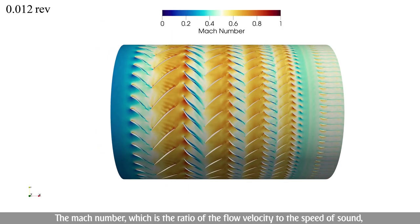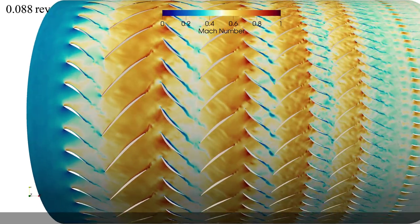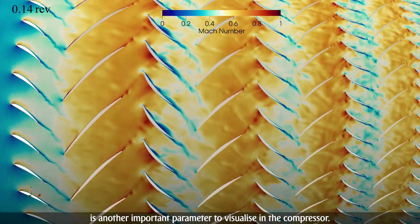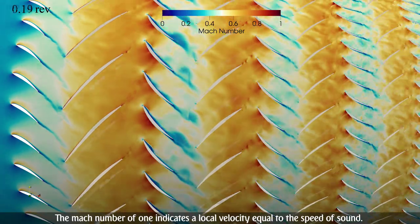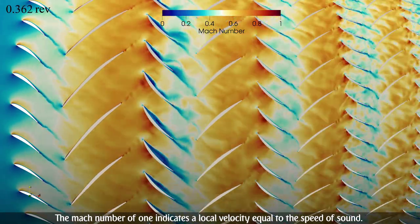The Mach number, which is the ratio of the flow velocity to the speed of sound, is another important parameter to visualize in the compressor. A Mach number of 1 indicates a local velocity equal to the speed of sound.